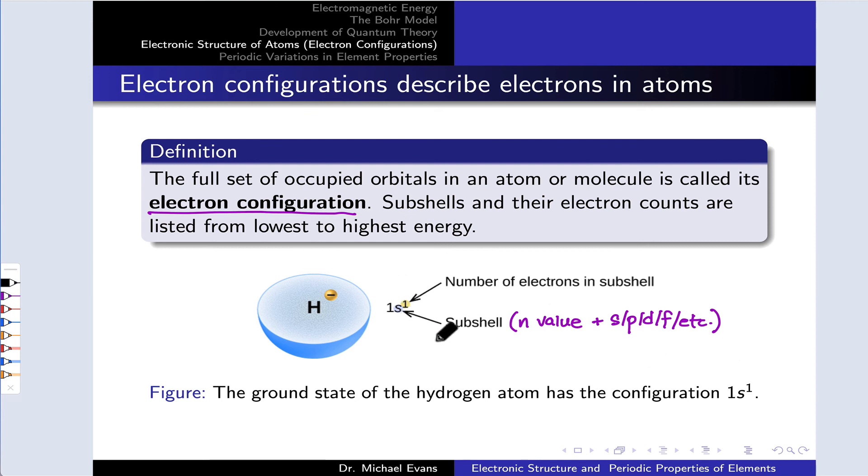Now, there's another way to represent electron configuration in diagram form that more clearly shows the energies of the subshells with respect to one another. We'll refer to this as an energy level diagram, or orbital energy diagram. We've played around with these a little bit already, plotting energy on the y-axis and plotting the subshell energy levels as horizontal lines.